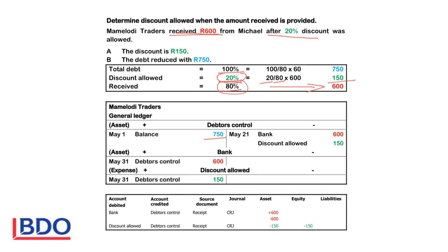The total debt is 750 Rand. We will reduce the account with the total 750, increase the bank with 600, and increase the discount allowed account with 150 Rand. The word 'debtors control' in the account indicates that this double entry is in the debtors control account, and 'discount allowed' indicates that this double entry is in the discount allowed account.